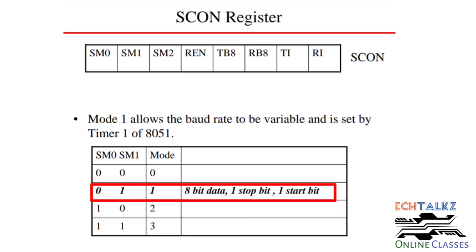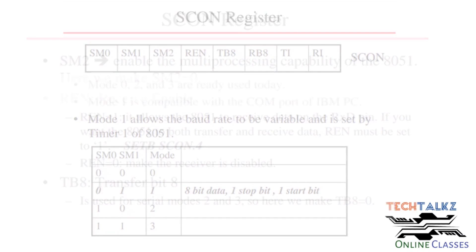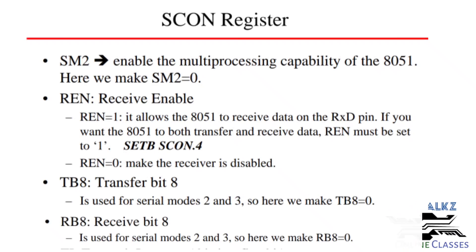In Mode 1, the SM0 and SM1 bits are set to 0 and 1 respectively. Mode 1 supports a variable baud rate with the help of Timer 1. The SM2 bit is used to enable multiprocessing; since Mode 1 is not using multiprocessing, SM2 is set to 0.